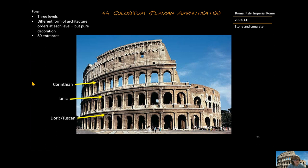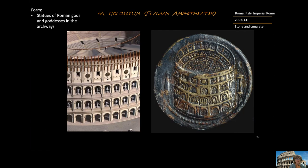It had three levels, each with a decorative architectural style: Doric or Tuscan on the bottom, Ionic, and then Corinthian. This had no impact on weight bearing — it was just for decoration. There were 80 entrances, and just like the arena in Spokane, lots of different entrances allow a huge crowd to go in and out rather quickly. That is a design we use today from the Romans.